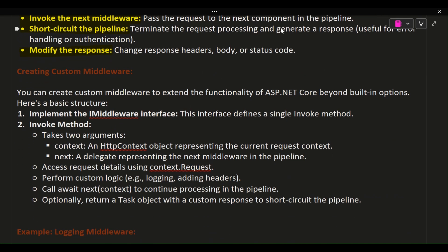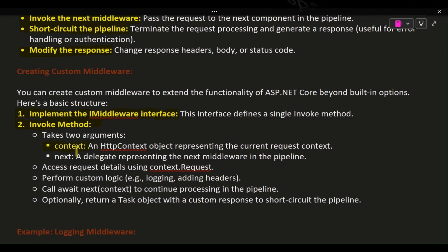Creating custom middleware: You can create custom middleware to extend the functionality of ASP.NET Core beyond built-in options. Here's a basic structure. First, implement the IMiddleware interface, which defines a single invoke method. The invoke method takes two arguments: context, an HttpContext object representing the current request context, and next, a delegate representing the next middleware in the pipeline.